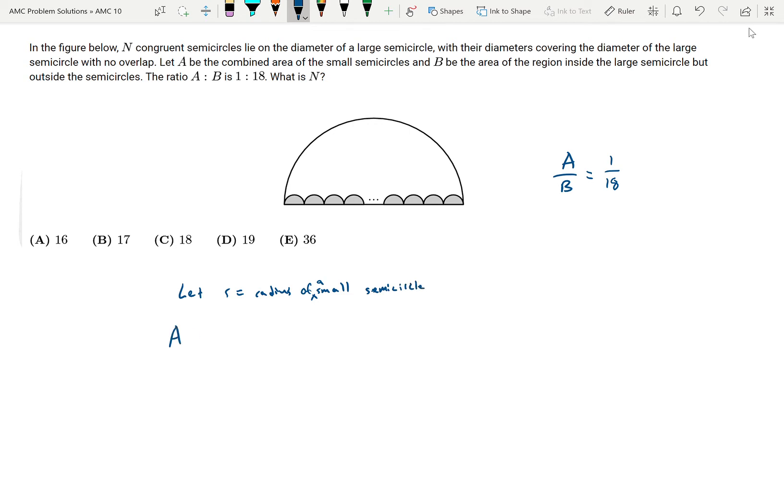So A is just going to be the number of small semicircles which is n times pi R squared. And since it's a semicircle we divide that by 2.